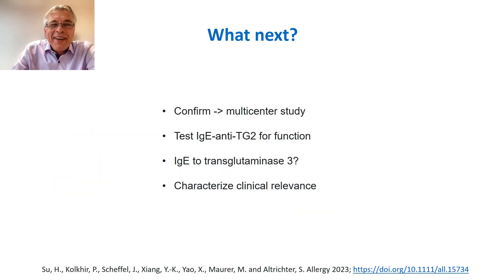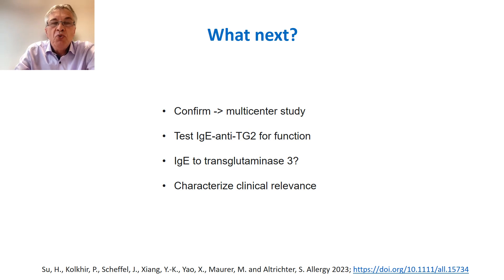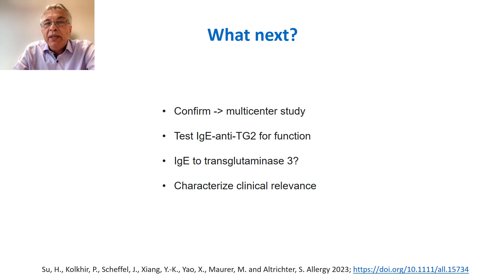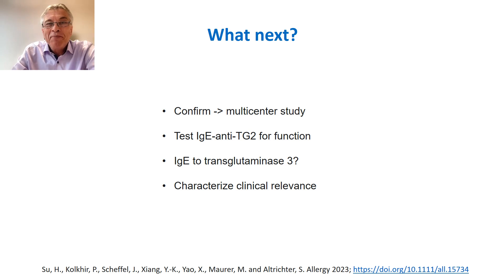So we now know that patients with chronic spontaneous urticaria — about 20% of them — have IgE to TG2. We want to confirm that in a bigger, multicenter study. We also need to test this IgE against TG2 for its function on mast cells, and we want to look further at IgE to TG2. Finally, we need to characterize the clinical relevance. This is only the first step to better characterize auto-allergy to TG2 and its relevance in chronic spontaneous urticaria.